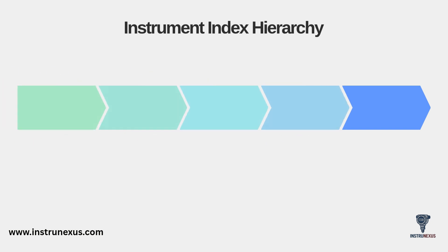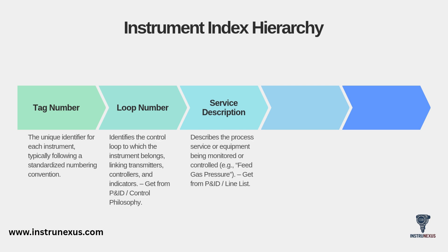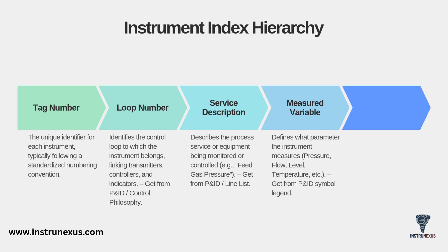Now let's talk about the data itself — the Instrument Index Hierarchy. These are the columns in your database. First, the tag number: the unique identifier for each instrument, following a standard numbering convention. Next, the loop number, which identifies the control loop the instrument belongs to, linking transmitters, controllers, and indicators — obtained from the P&ID or control philosophy. Then the service description, describing what it's monitoring, like feed gas pressure. You'll also list the measured variable, like pressure, flow, or level, and the instrument type, such as transmitter, indicator, or control valve — both taken directly from the P&ID.